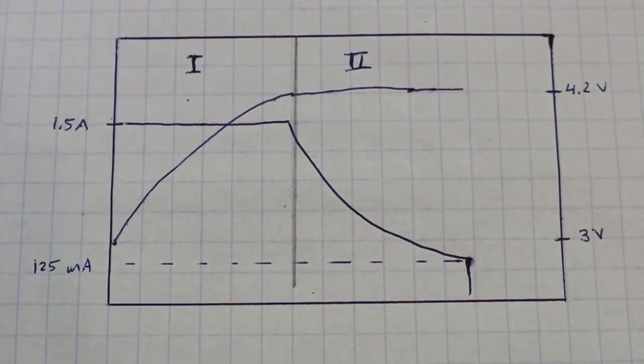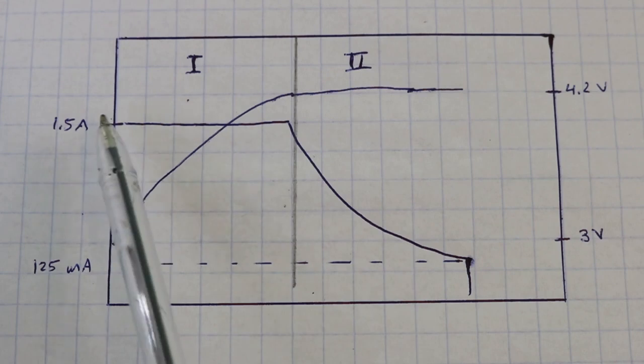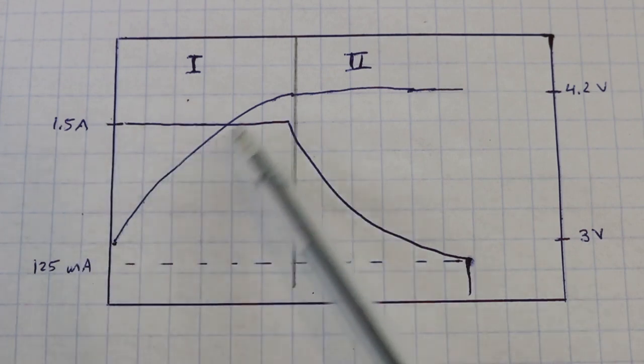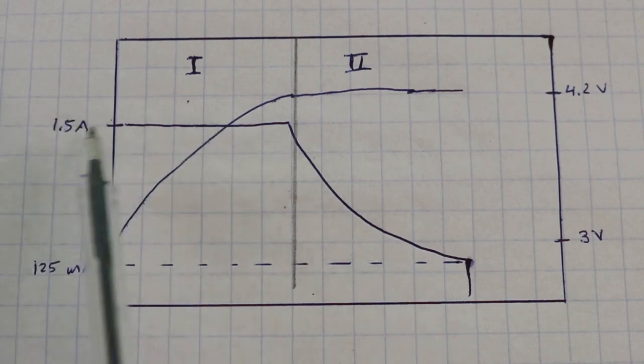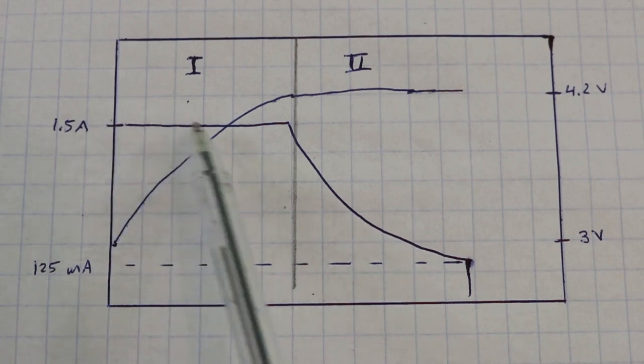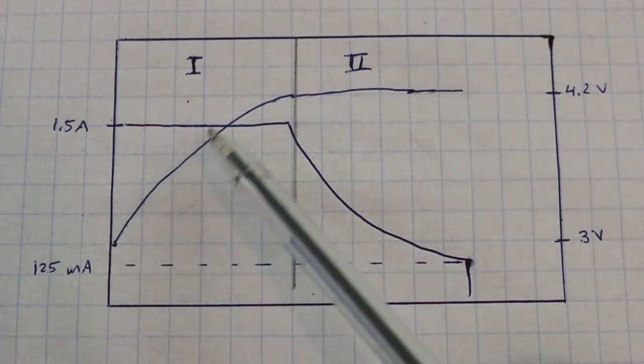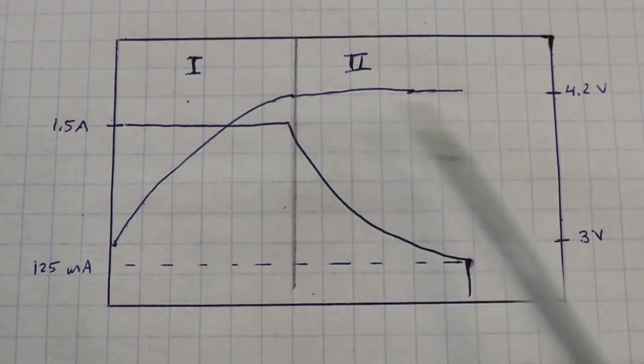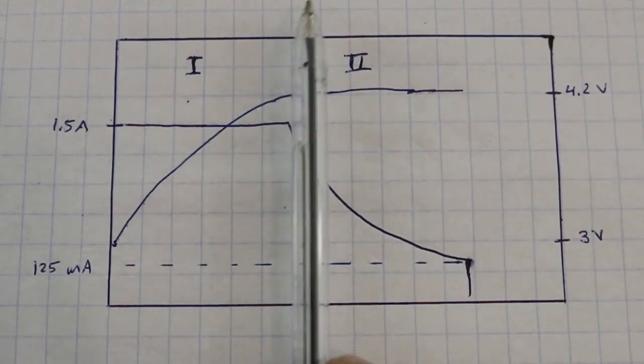Here we can see the charge process. In this axis we have the current and this is the voltage. The horizontal axis is the charging time. Here we have our current curve and this is the voltage curve. Initially we apply a constant current 1.5 amps and the voltage of the battery is 3 volts. It is discharged. So we apply constant current and the voltage starts to increase. There will be a point when the voltage reaches the value of 4.2 volts, the current is still constant and here finishes the first stage.